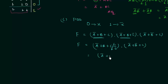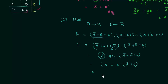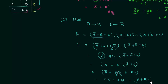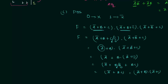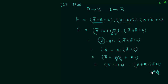From those two terms we take A complement as common and use the distributive law, giving A complement OR (B AND B complement OR B AND C). Since B AND B complement equals 0, we have A complement OR (B AND C). Applying distributive law again: F = (A complement OR B) AND (A complement OR C). This is the simplified product of sums expression for F.